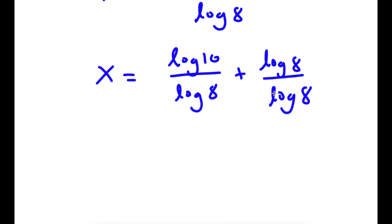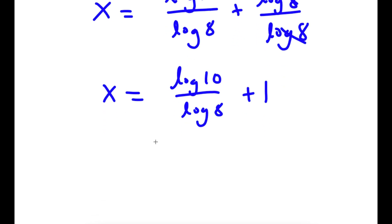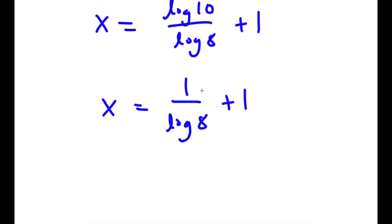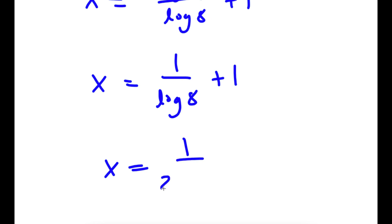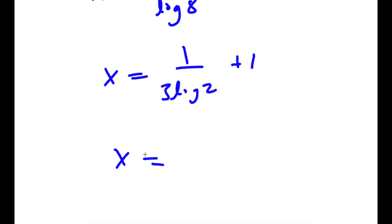Now, anything divided by itself is 1, so log 8 over log 8 — those two cancel out. So now I have log 10 over log 8 plus 1, and log 10 is also 1, so I have x is equal to 1 over log 8 plus 1. So log 8 is the same thing as 3 times log 2, which is equal to approximately 2.1074.